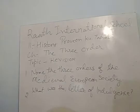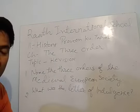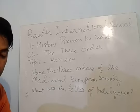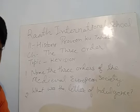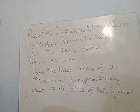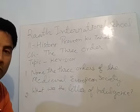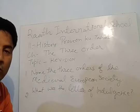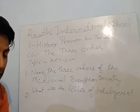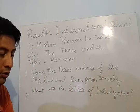How did the nobles enjoy a privileged status? Name the three orders of the society. The three orders of the society are: priest, nobility, and the peasantry.